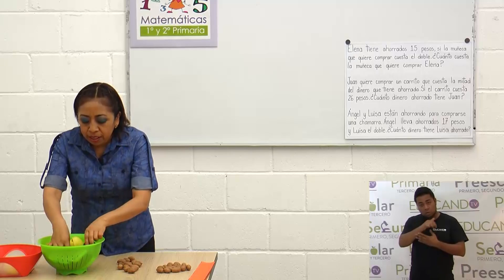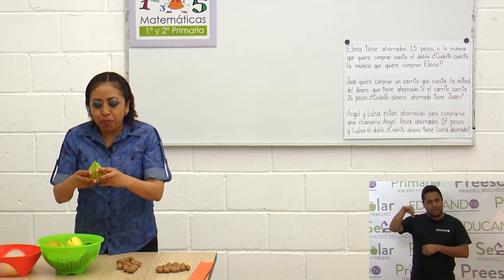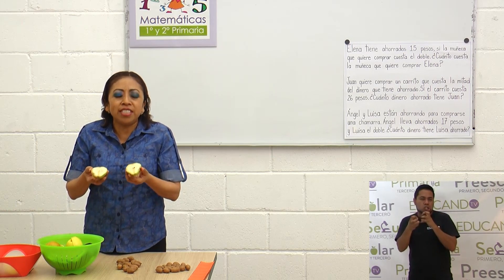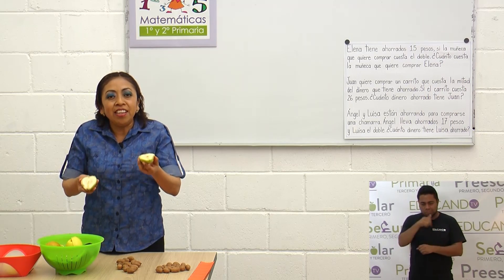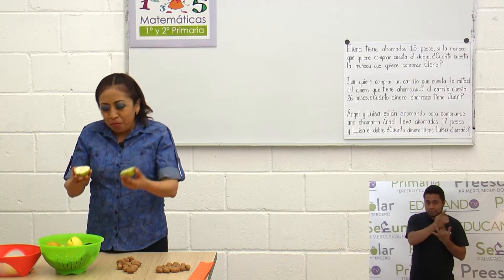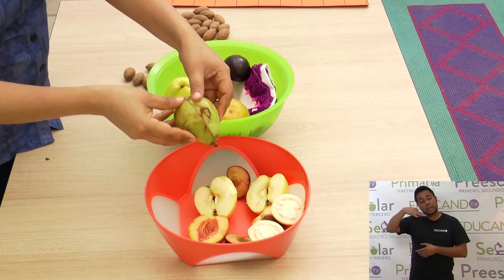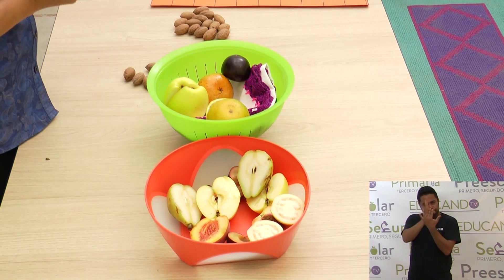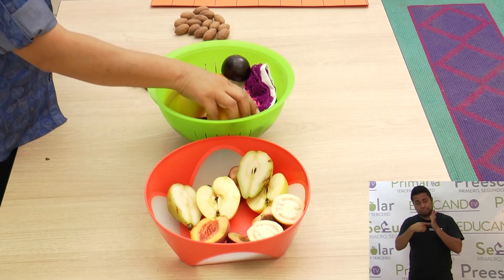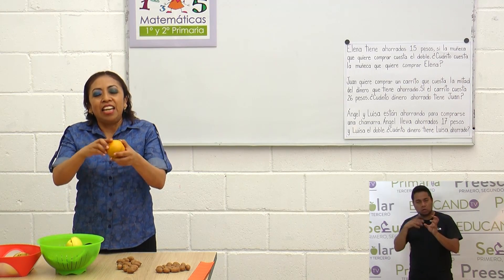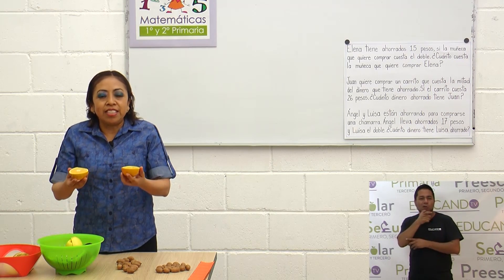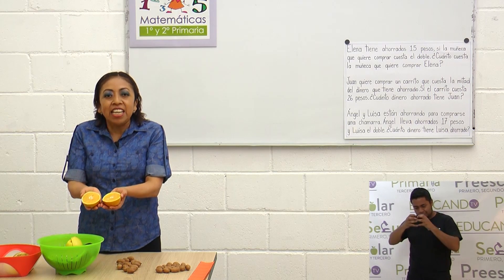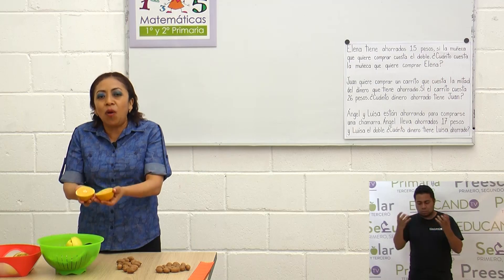Vamos a ver otra fruta. También traemos una pera, ya cortada en dos partes iguales. Las peras se oxidan — al igual que las manzanas — muy rápido; se ponen como cafecitas. ¿Cómo se llama cada parte? Mitad: una mitad, dos mitades. Esta pera ya está en mitades; se ven las semillas porque la cortamos justo en medio. Y finalmente vamos a ver una naranja — la cortamos, muy familiar cuando hacen tu jugo. Aquí tenemos una mitad, dos mitades: las partimos en dos partes iguales.